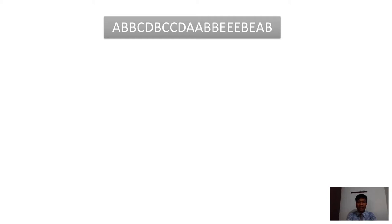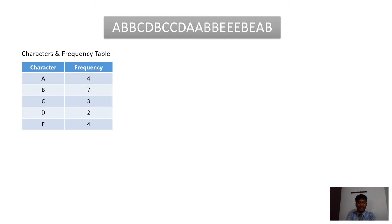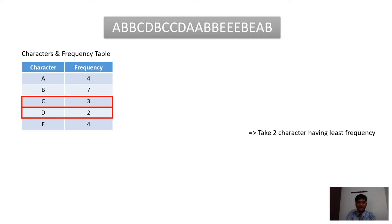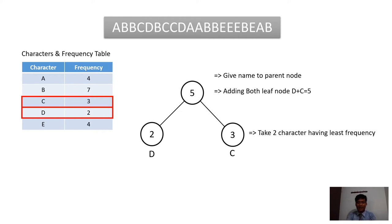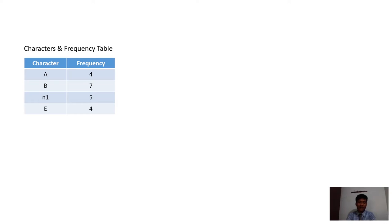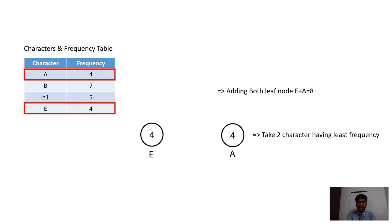Fill the message into a character frequency table: A has frequency 4, B has frequency 7, C has frequency 3, D has frequency 2, and E has frequency 4. Take the 2 characters with the least frequency — D and C — and add both leaf nodes: D plus C equals 5. Give this parent node the name YAN1. Fill YAN1 into the table and take the next 2 characters with least frequency: A and E. Add both leaf nodes A and E, which equals 8, and name the parent node YAN2.